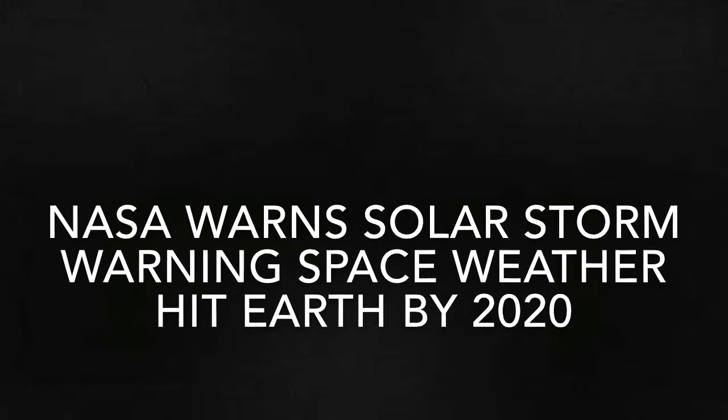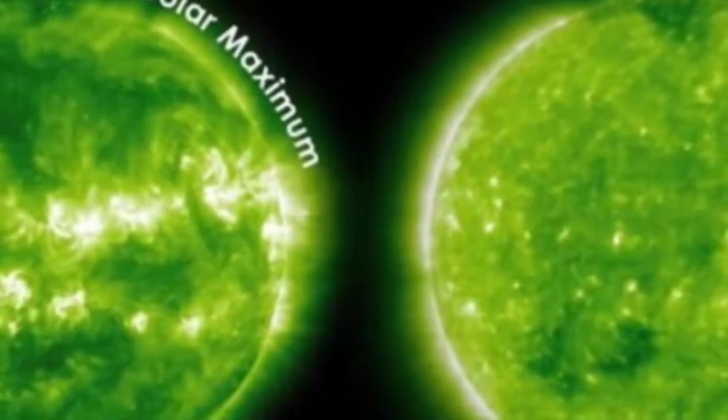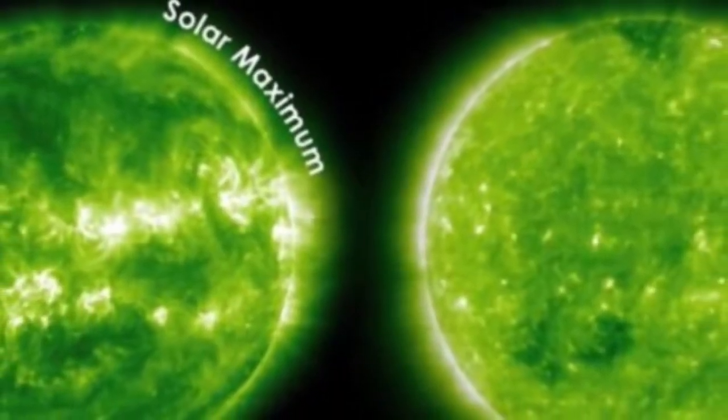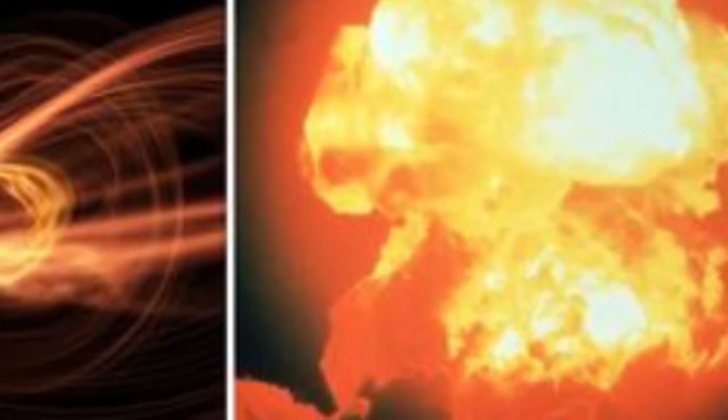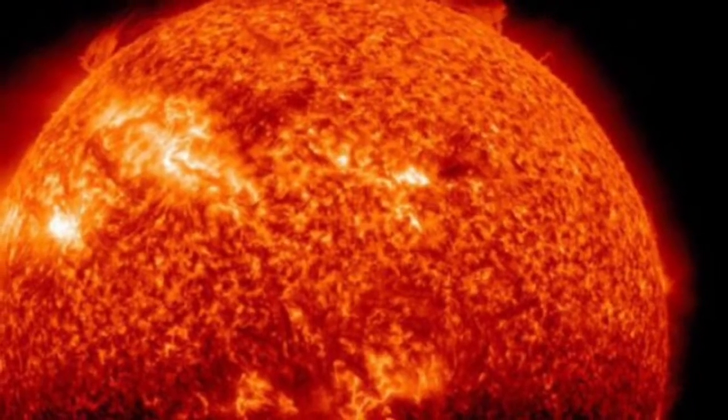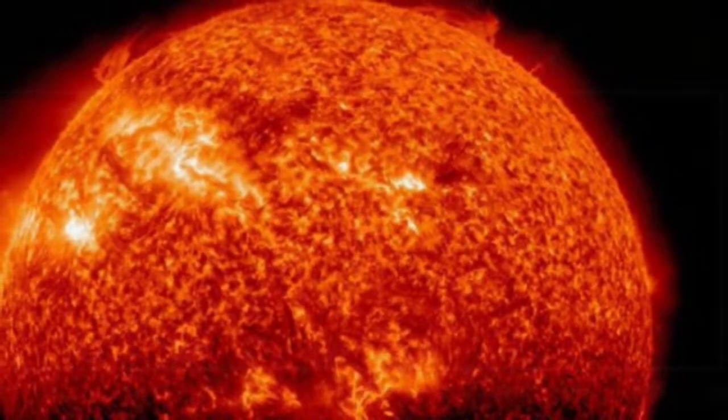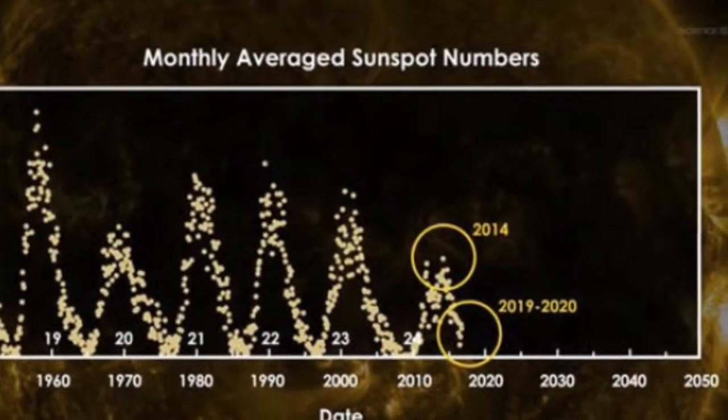Solar storm warning: devastating space weather could hit Earth by 2020. NASA warns powerful solar storms ejected from holes in the surface of the Sun could wreak havoc across Earth as early as 2020. The Sun will undergo a period of solar minimum between 2019 and 2020, and with it comes the increased risk of solar storms.